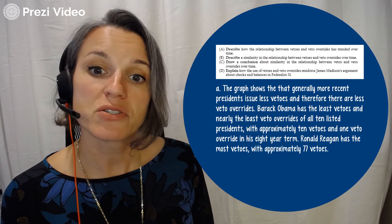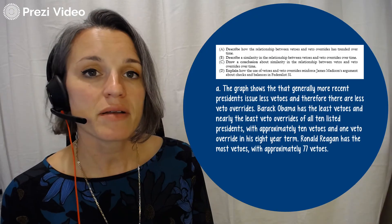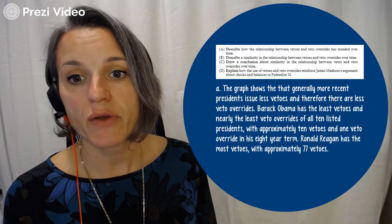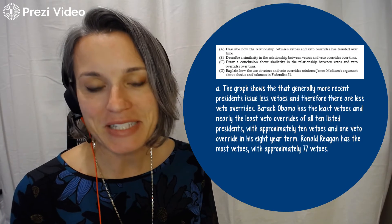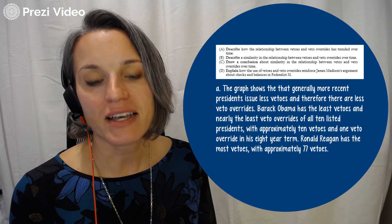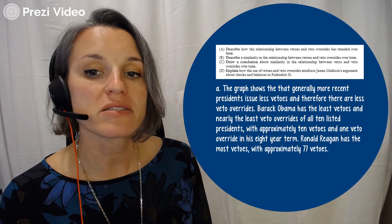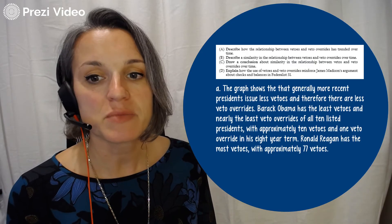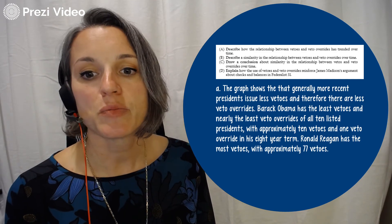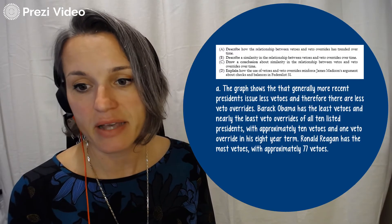For the A point, we're describing how the relationship between vetoes and veto overrides has trended over time. Repeating the prompt: 'The graph shows that more recent presidents generally issue fewer vetoes and therefore have fewer veto overrides.' Barack Obama has the least vetoes and nearly the least veto overrides of all ten presidents listed — approximately 10 vetoes and one veto override in his eight-year term. Ronald Reagan has the most, with approximately 77 vetoes.